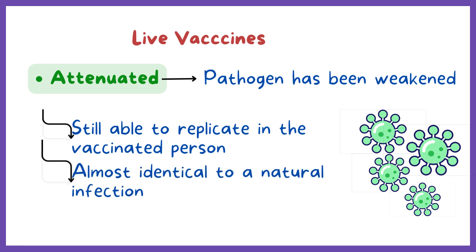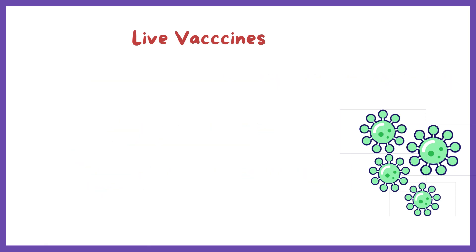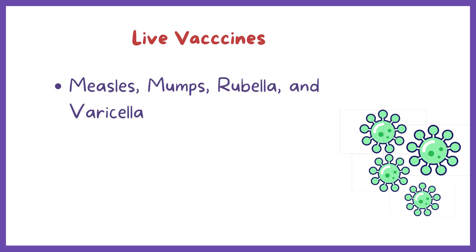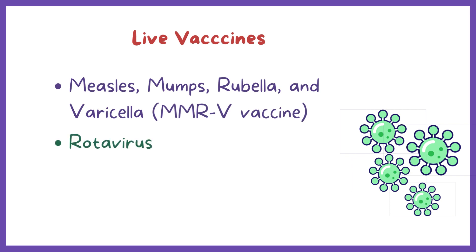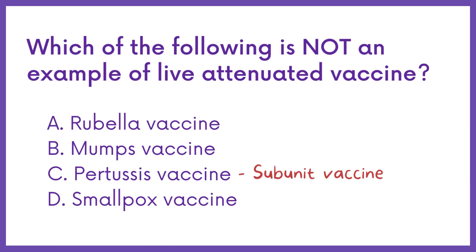Live vaccines are used to protect against measles, mumps, rubella, and varicella — the MMRV vaccine — rotavirus, smallpox, and yellow fever. Therefore, the answer is option C, Pertussis vaccine, as it is not a live attenuated vaccine.